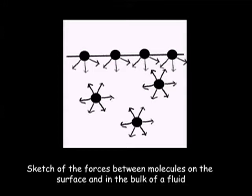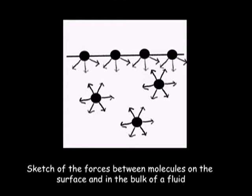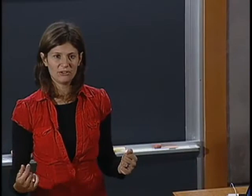This is a sketch of the forces between molecules on the surface and in the bulk of a fluid. Each dot represents a water molecule and the arrows represent electrical forces that keep molecules close to each other. When we consider a molecule in the bulk, it is surrounded by molecules of the same type. It feels the same force in every possible direction, so the net force is zero.